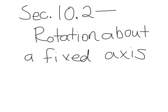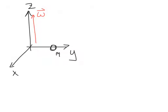In this section, we'll discuss rotation of a body about a fixed axis. Consider the simple case of a point particle having mass m fixed in the x-y plane. It has an angular velocity vector which points parallel to the z-axis and has magnitude omega.